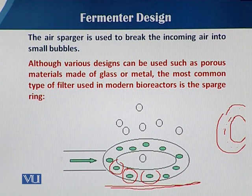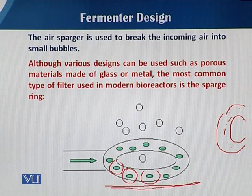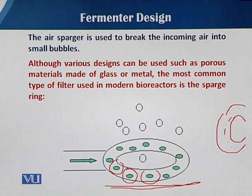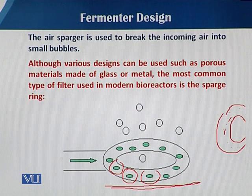In daily life you can see the stove — how the natural gas comes out from your stove. You have different designs and different shapes, just to give equal distribution in the whole. In the same way, in a fermentation system the sparger gives equal distribution of the air into the fermentation vessel and provides a proper size and shape of the bubbles.